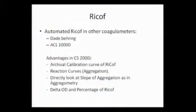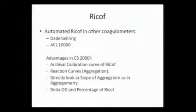If you look at comparability for CS2000, there is a good comparison between the antigen and the ristocetin cofactor assay in patients with Type 1 and Type 3 compared to other coagulometers like ACL 10,000 or the aggregometer. Among all the patients, there's a good correlation between the CS2000 and Chronolog, which is the traditional ristocetin cofactor assay. The advantage of the CS2000i is that you have an archival calibration graph, reaction curves you can see, and you can directly look at the slope of the aggregation to confirm results. It also gives you the value of the delta OD and percentage of RECOF.